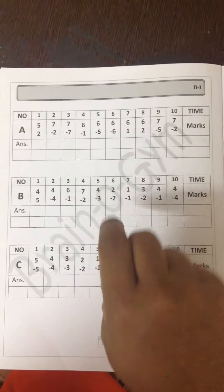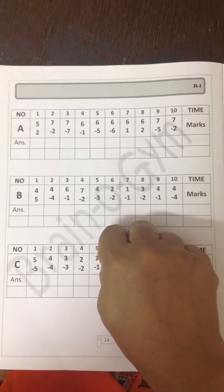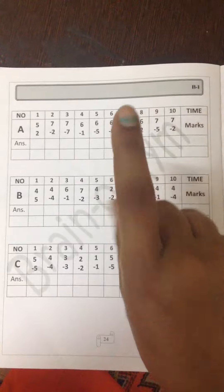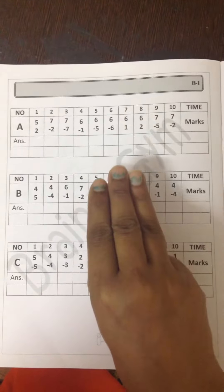2 minus 2. This is 0. 1 minus 1. This is 0. 3 minus 2. This is 1. 4 minus 1. This is 3.